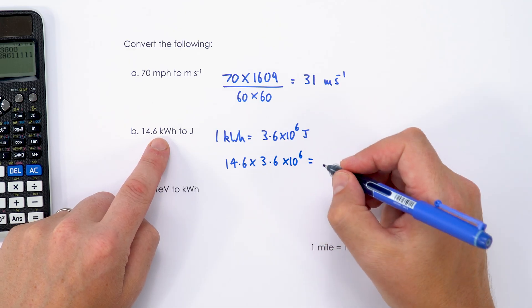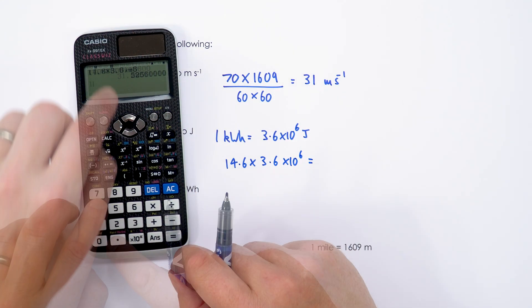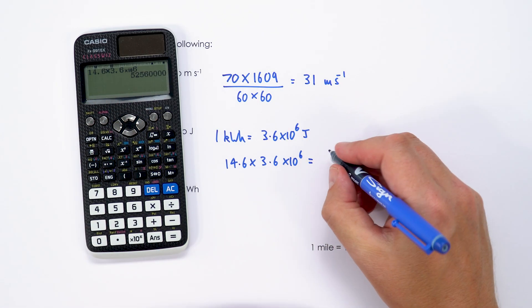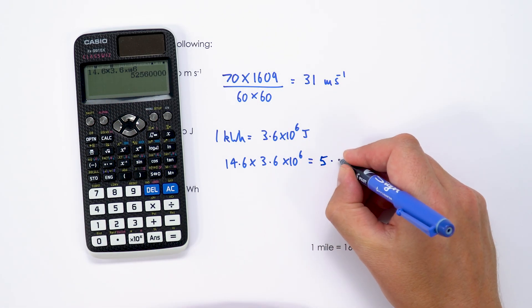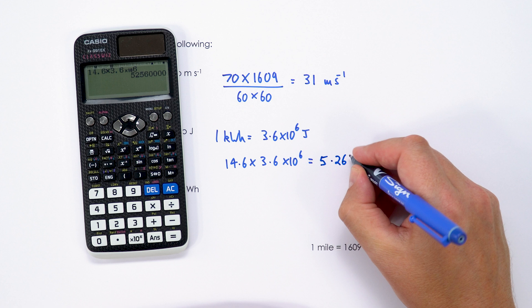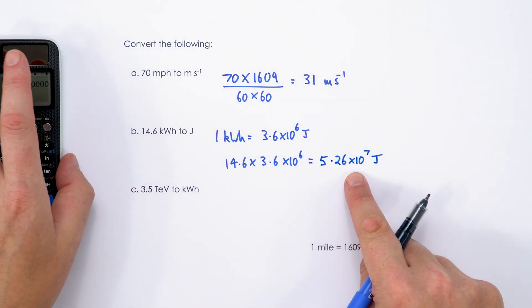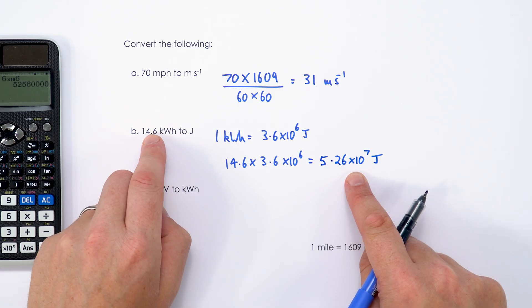To get the total energy in joules which equals 5,256,000, which is equal to 5.26 times 10 to the 7 joules. Okay, so a very large number of joules in just 14.6 kilowatt hours.